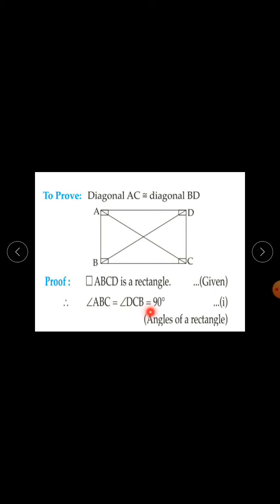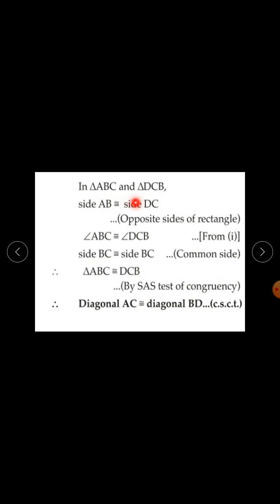Quadrilateral ABCD is a rectangle — given. Therefore, angle ABC is equal to angle DCB equal to 90 degrees — angles of a rectangle. This is equation 1. In triangle ABC and triangle DCB: side AB is congruent to side DC — opposite sides of a rectangle. Angle ABC is congruent to angle DCB from equation 1. Side BC is congruent to side BC — common side. Therefore, triangle ABC is congruent to triangle DCB by SAS test of congruency. Their corresponding sides are congruent by CPCT. Therefore, diagonal AC is congruent to diagonal BD. Hence proved.